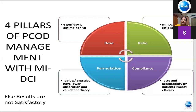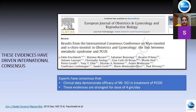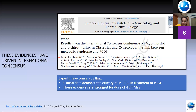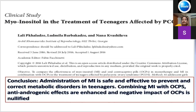Regarding myo-inositol, given its role in pathogenesis, it has been shown to have an effective role in reducing hirsutism and regularization of cycles, provided it is given in optimal dosages of around 4 grams per day. Tablets or capsules have lower absorption and can alter efficacy. Clinical data demonstrates the efficacy of myo-inositol in treatment of PCOS, with evidence strongest for the dose of 4 grams per day. Myo-inositol is safe and effective to correct metabolic disorders in teenagers, and combining myo-inositol with other treatments nullifies their negative impacts.